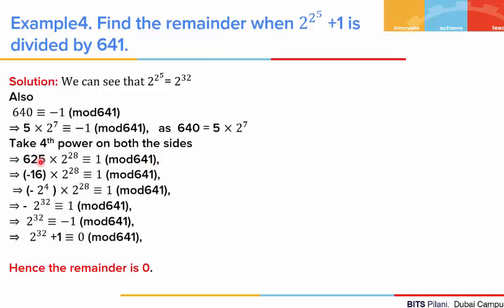Now, 625 is congruent to minus 16 mod 641. So we write minus 16 as minus 2 to the power 4, and 2 to the power 28 stays as is — giving us minus 2 to the power 4 times 2 to the power 28 is congruent to 1 mod 641. Combining the powers: minus 2 to the power 32 is congruent to 1 mod 641. This gives us 2 to the power 32 is congruent to minus 1 mod 641. Multiplying both sides by minus 1, we get 2 to the power 32 plus 1 is congruent to 0 mod 641. So the remainder is 0.